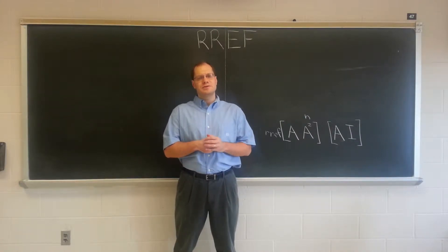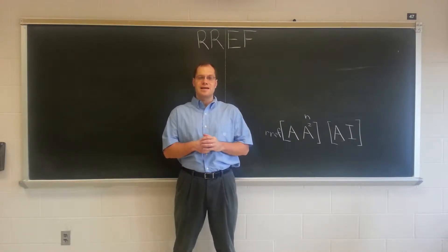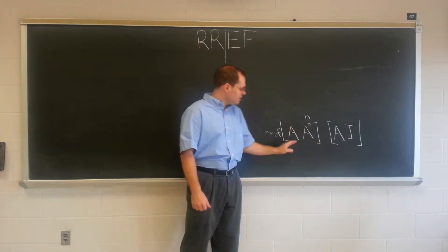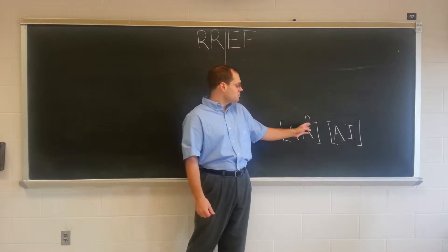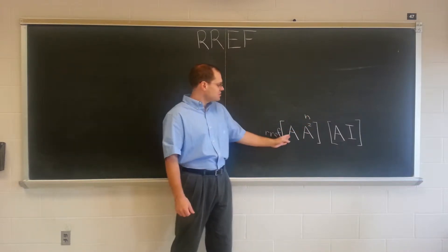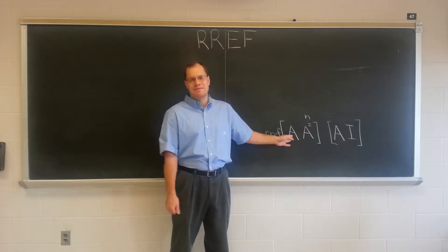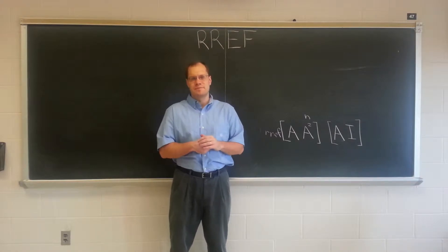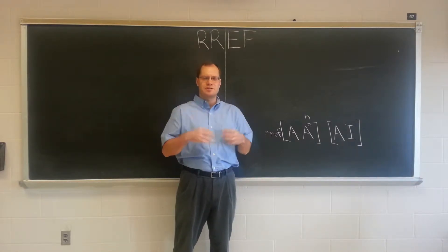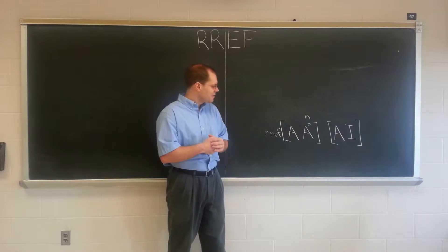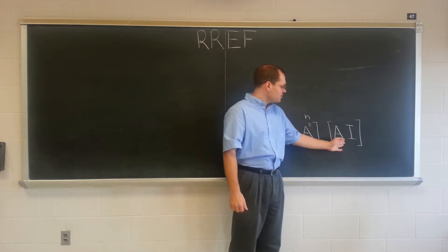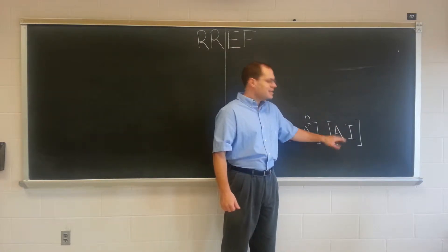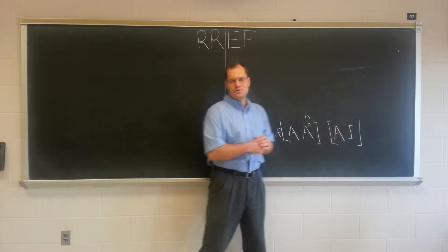Hello! Today we're going to answer the question that I left you with last time, which is to find the row-reduced echelon form of this combined matrix, where a matrix A squared, or in general A to the N, is written next to an invertible square matrix A. That's actually a much more interesting question than it appears to be. It forces you to understand matrix multiplication even better, and it leads to what I consider to be the best explanation for the algorithm for finding the inverse.